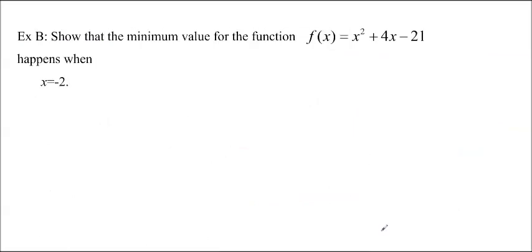Okay, example two. Show that the minimum value for the function f(x) = x² + 4x - 21 happens when x equals negative 2. Now we could use the difference quotient again, and just fill in the numbers and do exactly what we just did. But I'm actually going to use the difference quotient to find the instantaneous rate of change for the whole function. And then I'm going to plug it in three times and do it that way.